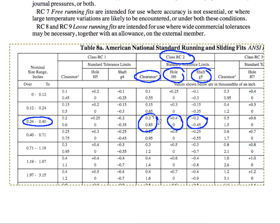The minimum diametral clearance is 2 tenths of an inch, so it's 0.0002 inches. We're talking an order of magnitude less than the diameter of your hair. So it's really, really tight for a quarter inch RC2 class clearance.